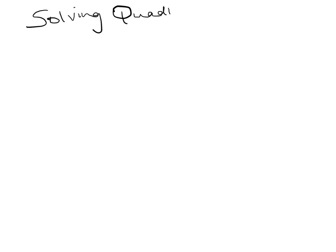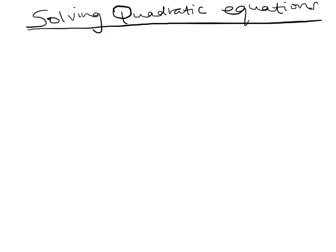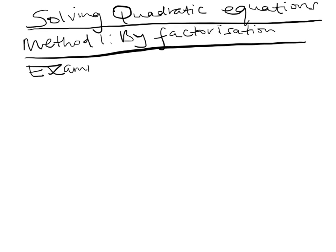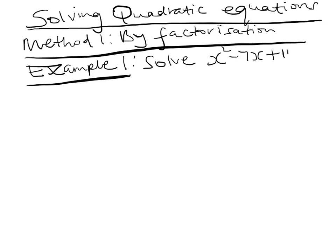Solving quadratic equations: method one, factorization. Example one — solve x squared minus 7x plus 10 is equal to zero.